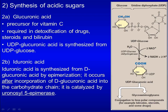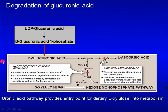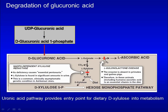L-iduronic acid is synthesized from D-glucuronic acid by epimerization, occurring after incorporation of D-glucuronic acid into the carbohydrate chain. Glucuronic acid is released from UDP-glucuronic acid first as D-glucuronic acid-1-phosphate, then D-glucuronic acid. D-glucuronic acid is oxidized to L-gulonate, a precursor for vitamin C. In humans, the key enzyme for the vitamin C synthesis pathway is absent. L-gulonate is converted to D-xylulose and funneled into the HMP pathway. The uronic acid pathway provides an entry point for dietary D-xylulose into metabolism.